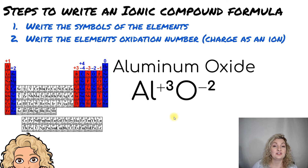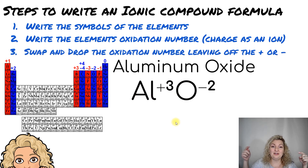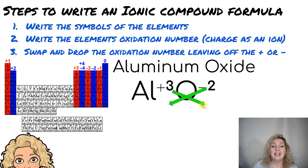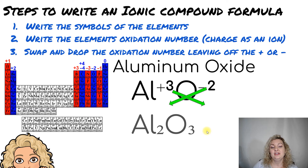What we do next is our swap and drop method. You're going to swap those to each other and drop them down. The two is now going to come for aluminum, and the three is now going to be over here for the oxygen. Remember, we're not taking the positives or negatives with us — we're going to leave those off. So here is our final answer: Al₂O₃.